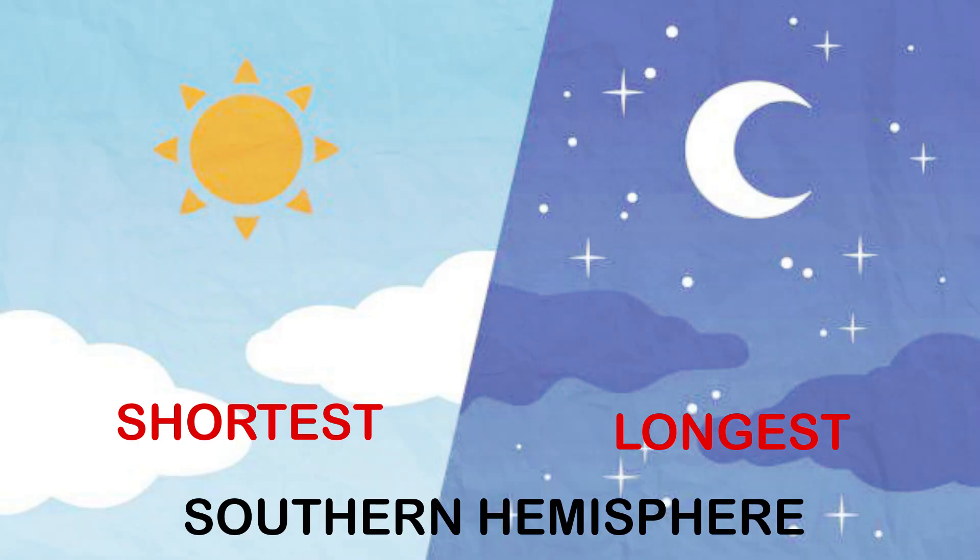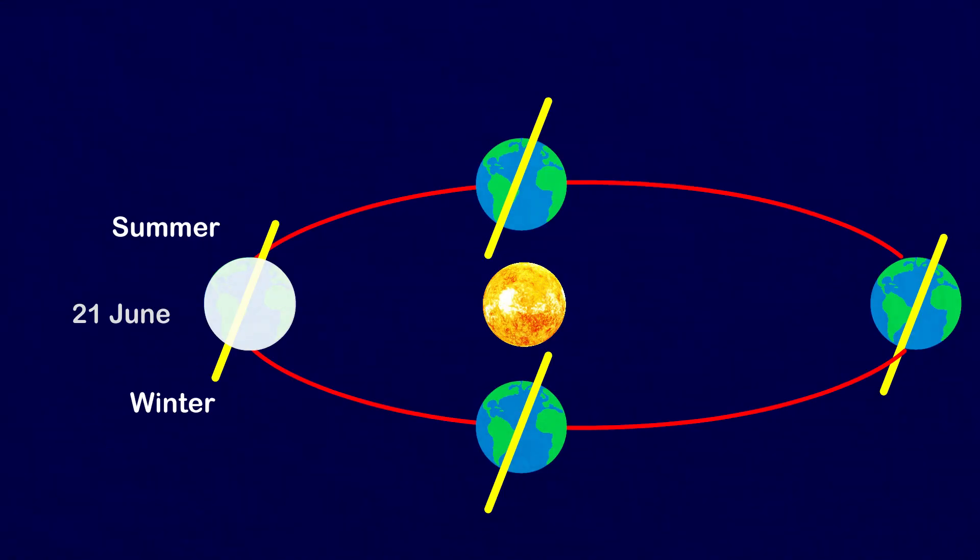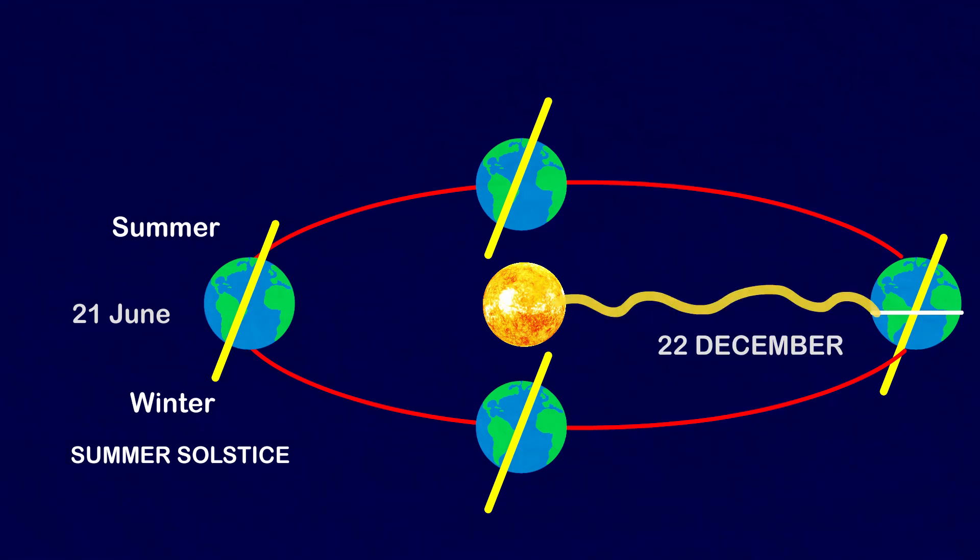This position of the earth is called the summer solstice. On 22nd December, the Tropic of Capricorn receives direct rays of the sun as the south pole tilts towards it.